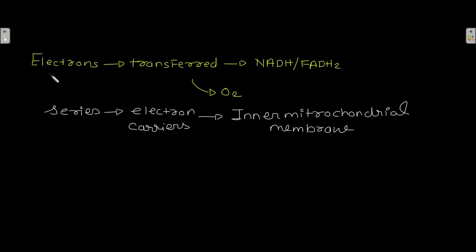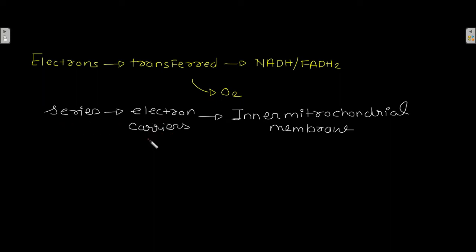Electrons are transferred from NADH and FADH2 to oxygen through a series of electron carriers present at the inner mitochondrial membrane. Through those series of electron carriers, the electrons are passed from NADH and FADH2 to oxygen.